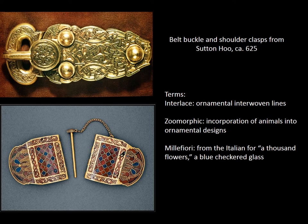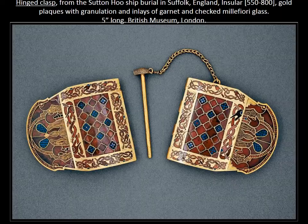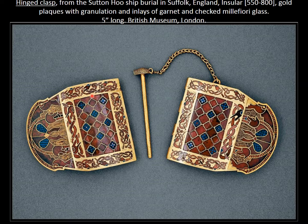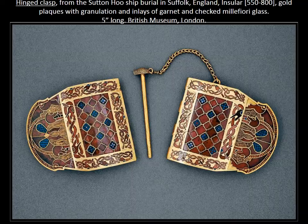Some of the things discovered at Sutton Hoo were primarily small pieces of decorative art: belt buckles and shoulder clasps. I'm starting with these because they establish a lot of the stylistic strategies — namely, they use interlace, which are ornamental interwoven lines, as well as zoomorphic forms with animals incorporated. Many use milfiore, a blue checkered glass, so the red and the blue you see here is glass, not jewels. Looking closely at this hinged clasp, you can find the animals — there are snakes, and two pigs seen in profile.